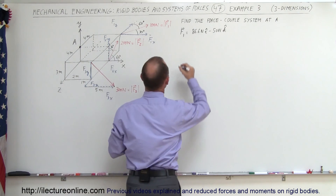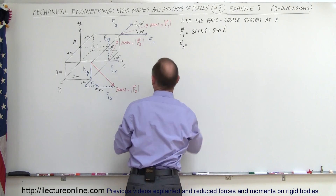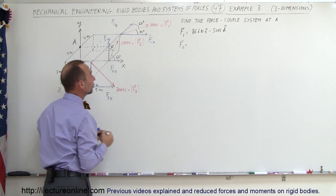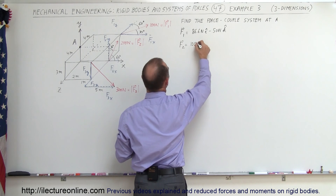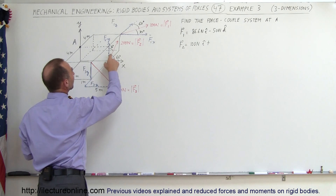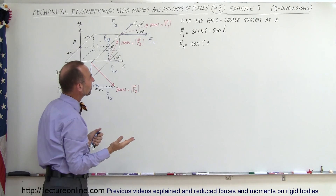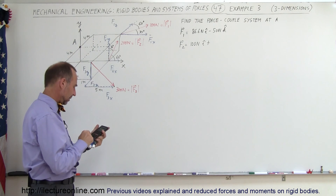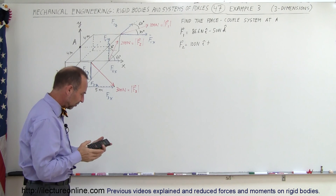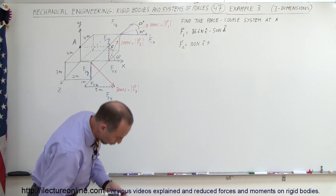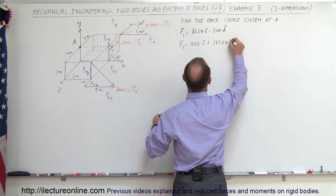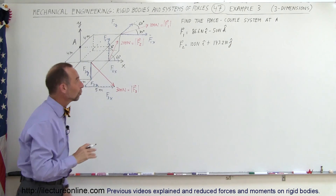To find F2: F2 equals the cosine of 60, which is 0.5, times 200 — that would be 100 newtons in the x direction — plus the sine of 60, which is 0.866, times 200. Using a calculator: sine of 60 times 200 gives us 173.2, so it would be plus 173.2 newtons in the y direction. Those are the components for force 1 and force 2.